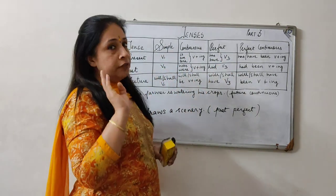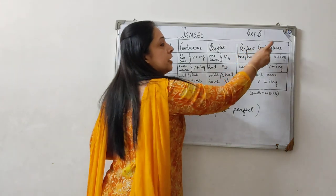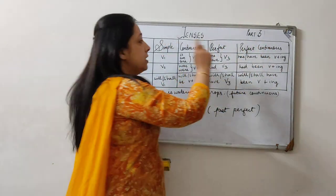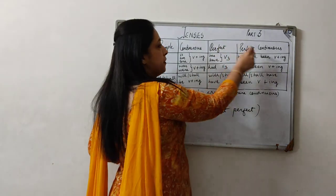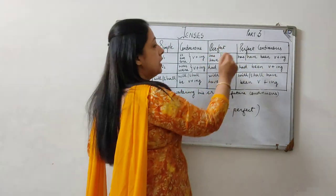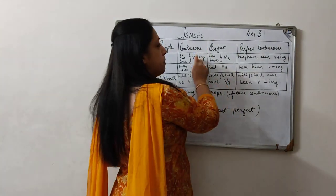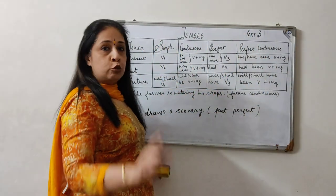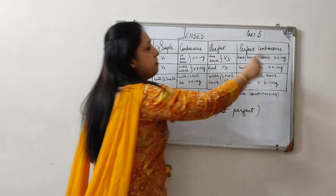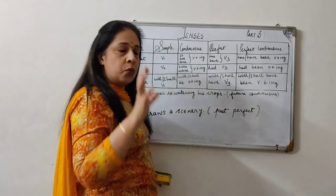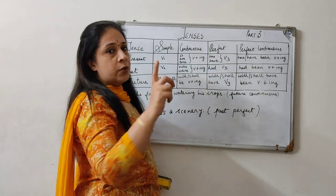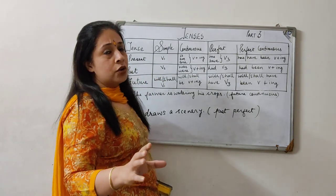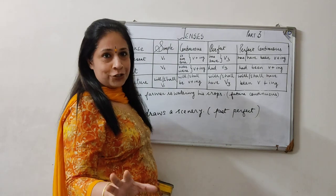In the perfect continuous, it is the combination of perfect and continuous. So we have to take 'has' and 'have' from perfect, and the ing part is from continuous, and when the two are together we put a 'been' in between. I want everyone to learn this table very, very nicely. You will never go wrong with tenses. You will never speak English wrong. You will never write wrong English.